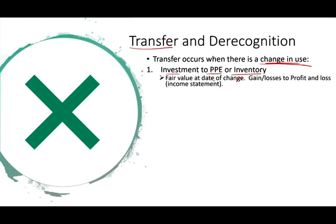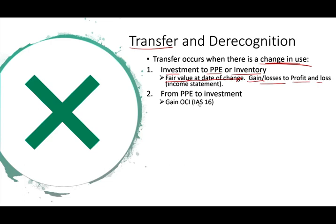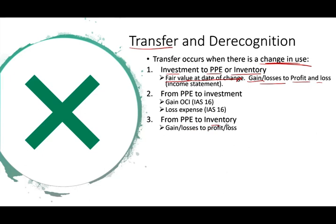When a transfer occurs, you determine the fair value at the date of change, and any gain or loss goes to profit or loss on the income statement. So if you go from investment property to PP&E, any change in fair value goes to the income statement. If you go from PP&E to investment property — you were using the building to house your operation and then decided to rent it out — any gain goes into OCI following IAS 16, and any loss goes into expense following IAS 16. If you transfer from investment property to inventory, the gain or loss goes to profit, since inventory is part of your operating income.